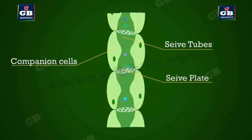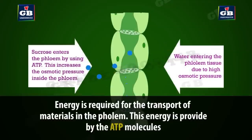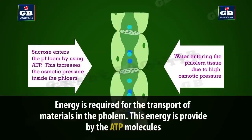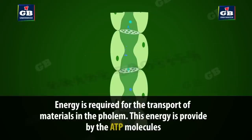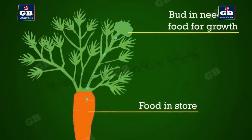Energy is required for translocation, and cells get this energy from ATP. With the use of ATP energy, sucrose enters the phloem tissue. This increases the osmotic pressure inside the phloem tissue. Due to this osmotic pressure, water enters the phloem tissues, and with this pressure, food materials are taken to different tissues of the plant. Phloem transports food as per the requirements of the plant.